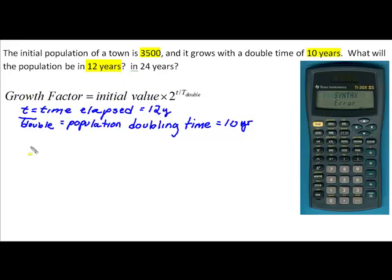Now it's a matter of plugging the information that we are given into the formula to come up with the future value of this population. The initial value is 3,500 times 2, raised to the time elapsed, which is 12 years, divided by the time to double, which is 10 years. When you enter that into your calculator, you are going to be entering in the 3,500 times 2, followed by the caret key, which is found above the x squared key in the first column on your calculator, on the TI-30. That alerts the calculator to the fact that an exponent is following. Then we enter in the rest of our exponent. And we are good to go.